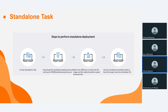The third method is standalone task. Many employees are now working remotely or from home, so you may need to deploy an operating system to computers that are not connected to your network. In this case, we use a standalone task. You create the standalone task, download the standalone deployment tool, select the bootable USB drive which contains the OS image, and then deploy the image to the target machine.